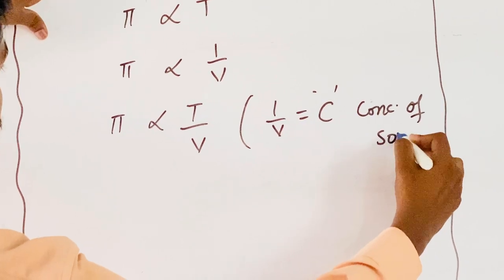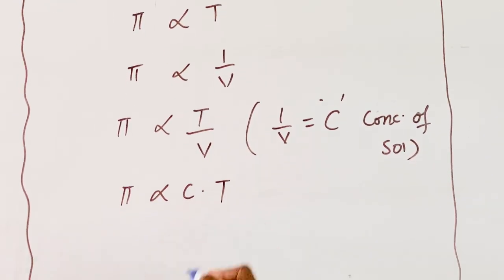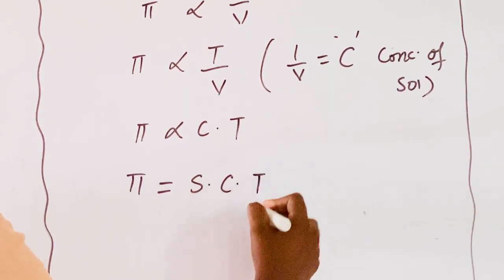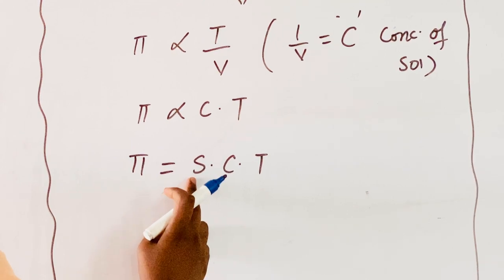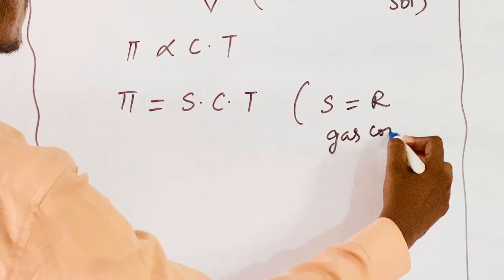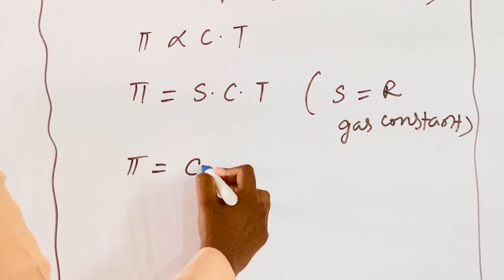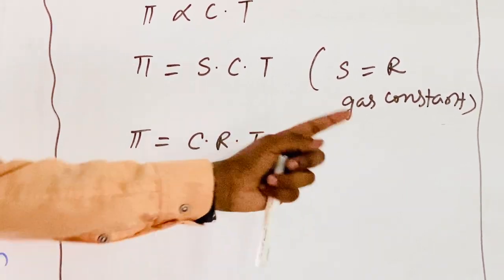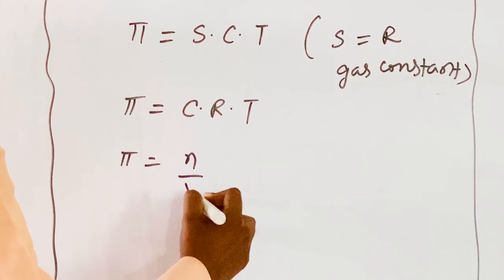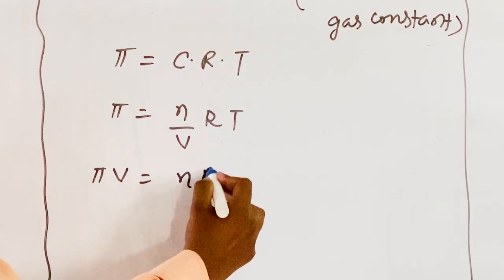Since 1/V is considered as the concentration of the solution C, Pi is directly proportional to C × T. Eliminating the proportionality constant, Pi = SCT, where S represents the gas constant — sometimes S equals R, the universal gas constant. Therefore, Pi = CRT, and from this, Pi × V = nRT. This gives the Van't Hoff equation.